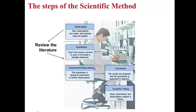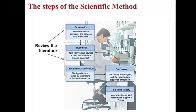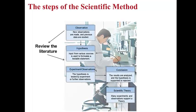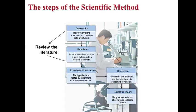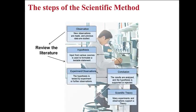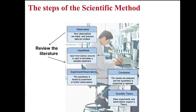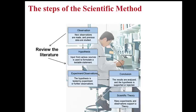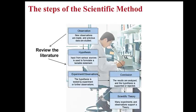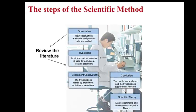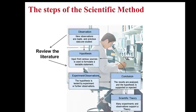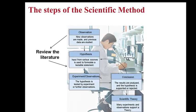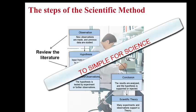The scientific method is the description of a process used to learn about the natural world, where observation, forming hypotheses, forming experiments, looking at the literature, forming conclusions, and over time, eventually forming theories. But this is not a linear process. This flowchart here is actually too simple.